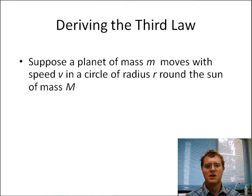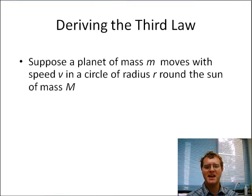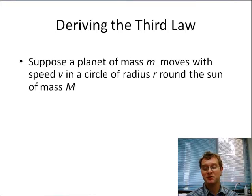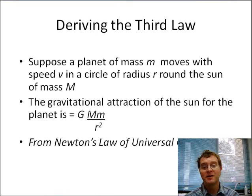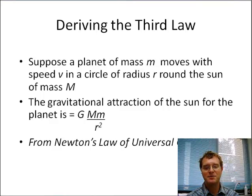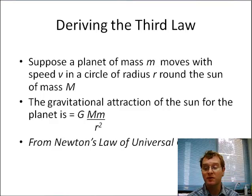Deriving the third law: we suppose we have a planet of mass m, and it moves with speed v in a circular orbit around the sun with mass M. Therefore, the gravitational attraction of the sun is G×M×m divided by r². This is from Newton's law of universal gravitation.